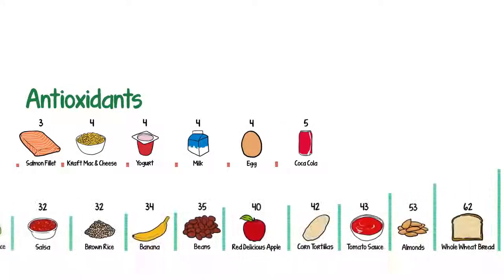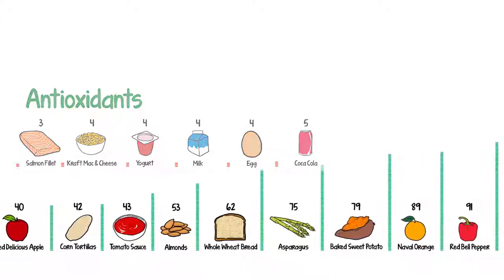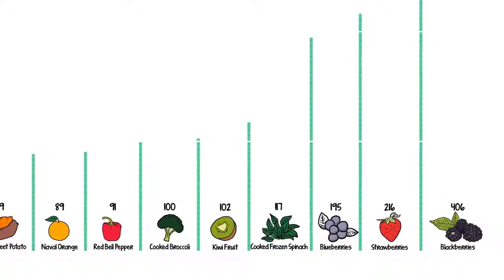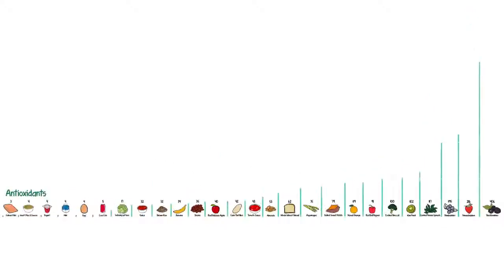Plant foods average 64 times more antioxidants than animal food. By getting most of your nutrition from whole plant foods, you get more of a bonus instead of baggage.